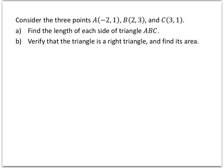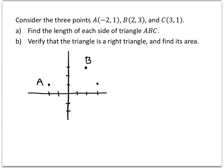Consider three points: A with coordinates (-2, 1), B with coordinates (2, 3), and C with coordinates (3, 1). The first thing we're asked to do is find the length of each side of triangle ABC. It's going to be helpful to have a picture, so let's plot these three points. Point A is at (-2, 1), point B is at (2, 3), and point C is at (3, 1). So our triangle looks something like this.